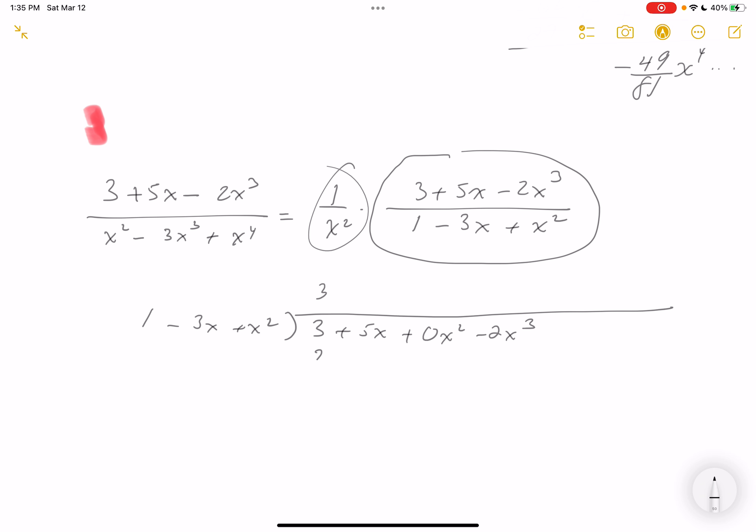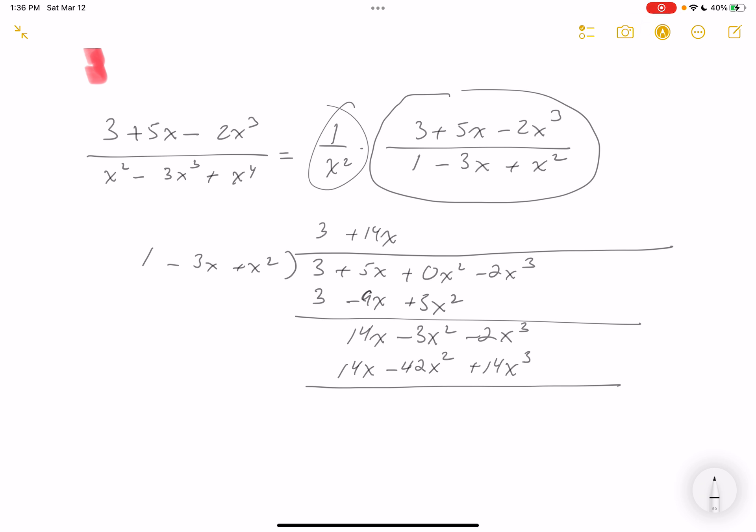Let's start. Looks like a 3. So 3 minus 9x plus 3x squared. What are we going to do? We're going to subtract. We get 14x minus 3x squared minus 2x cubed. Let's start again with 14x. That gives you minus 42x squared plus 14x cubed.